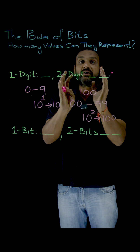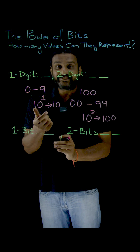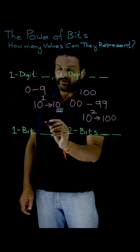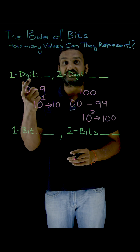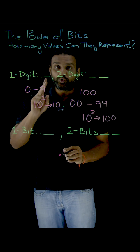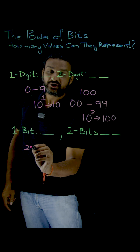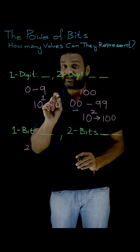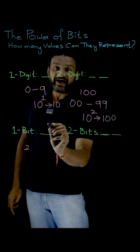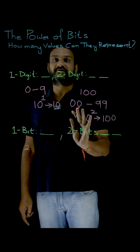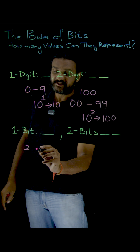Now we will move on to our binary number system. In the binary number system, we call each digit a bit. With one bit, how many numbers are possible? There are only two different symbols in the binary number system: 0 and 1. With one bit space, we can either accommodate a 0 or a 1.